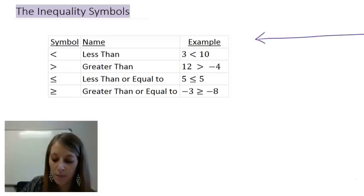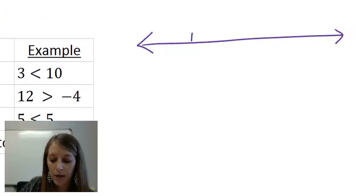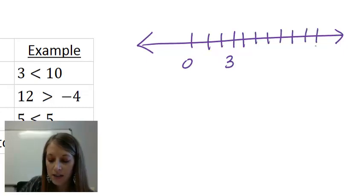So for example, if I were to draw my number line, and if I were to draw my numbers, I'd have 0, 1, 2, 3, 4, 5, 6, 7, 8, 9, 10.